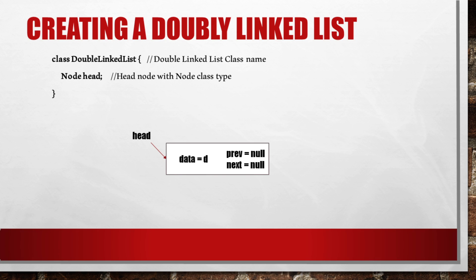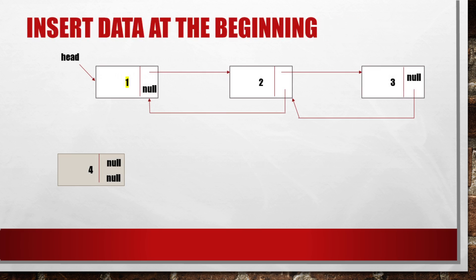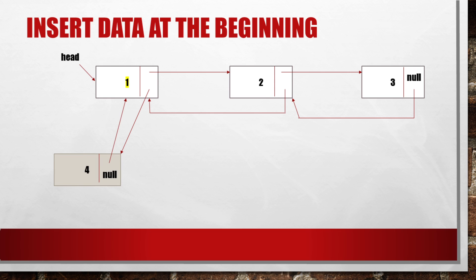I will give you an example of how to insert data at the beginning of a doubly linked list. I want to insert a new node with value 4 at the beginning. To do this, first set the first node's previous link to the new node. Then set the new node's next link to the first node with value 1. Now change the head pointer to point to the new node with value 4.